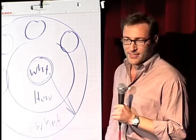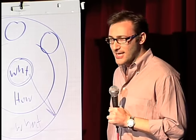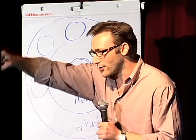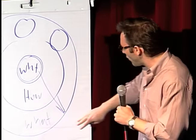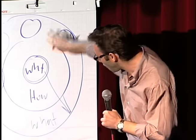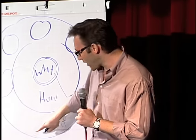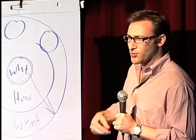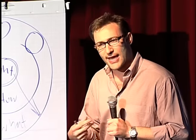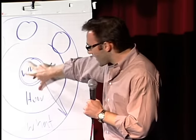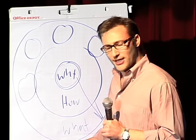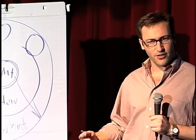Here's the best part. None of what I'm telling you is my opinion. It's all grounded in the tenets of biology. Not psychology. Biology. If you look at a cross-section of the human brain, looking from the top down, what you see is the human brain is actually broken into three major components that correlate perfectly with the golden circle. Our newest brain, our homo sapien brain, our neocortex, corresponds with the what level. The neocortex is responsible for all of our rational and analytical thought and language. The middle two sections make up our limbic brains, and our limbic brains are responsible for all of our feelings, like trust and loyalty. It's also responsible for all human behavior, all decision-making, and it has no capacity for language.